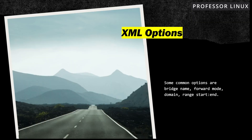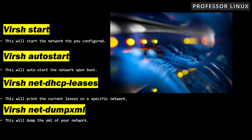The XML options I was talking about include bridge name, forward mode, domain, range, start, and end. For starting your network, you use virsh net-start — that was a typo earlier, it should be net-start. This starts the network you configured. Then there's virsh net-autostart, which auto-starts it upon boot. When your host starts KVM, it will boot its virtual networks automatically. There's also virsh net-dhcp-leases, which gives you the DHCP leases in the designated virtual network, and virsh net-dumpxml, which dumps the XML of your network.